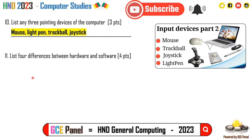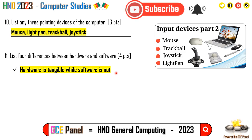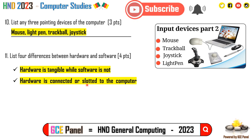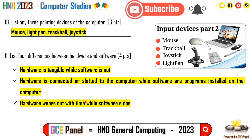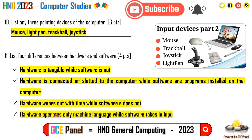Section B, Question 11: List four differences between hardware and software. First, hardware is tangible while software is not. Second, hardware is connected or slotted to the computer while software is installed. Third, hardware wears out with time while software does not — it can only become outdated. Fourth, hardware operates only in machine language while software takes inputs in human language.